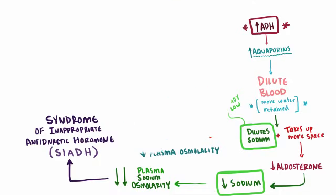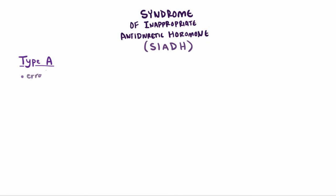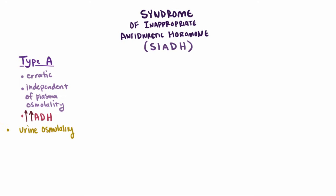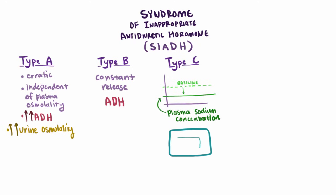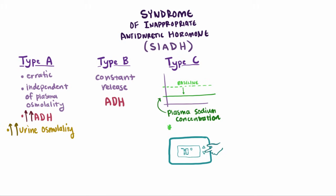There are four patterns of ADH release in people with SIADH. Type A is completely erratic and independent of the plasma osmolality; ADH levels tend to be very high, retaining maximum fluid and causing urine osmolality to be very high as well. Type B is a constant release of a moderate amount of ADH. Type C is where the baseline plasma sodium concentration is set lower than normal — like turning down a thermostat — and is unique because plasma sodium concentration is stable, unlike other SIADHs. Type D is the least common, where ADH secretion is completely normal yet urine osmolality is still high.